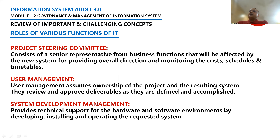User management owns the project and the resulting system. They review and approve deliverables as they are defined and accomplished. Before a project starts, we define deliverables — what the project team is going to deliver to a particular department. The users, who are the actual users, will review and approve that the deliverables are done and accomplished as promised.